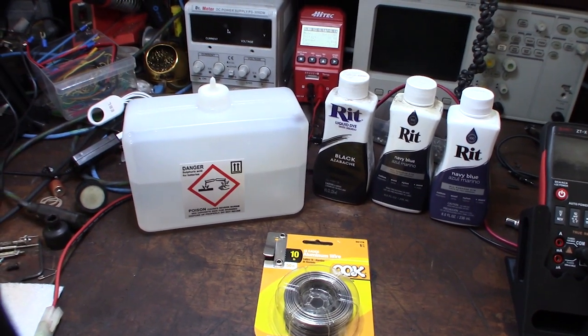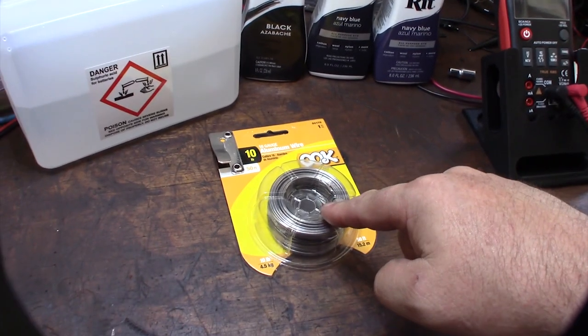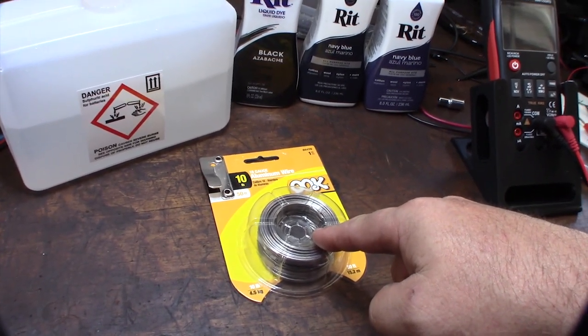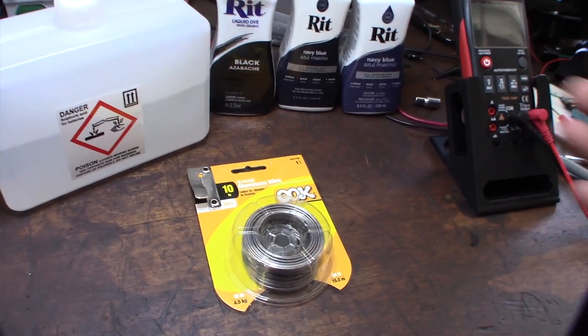You just need some battery acid, sulfuric acid, some material wire. So the material has to be the same material as what you're doing, like aluminum. You need aluminum wire if you're going to anodize an aluminum piece or steel with steel.